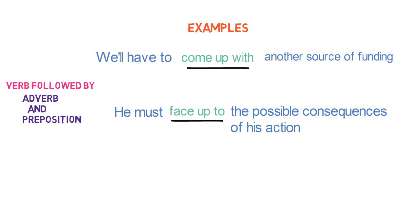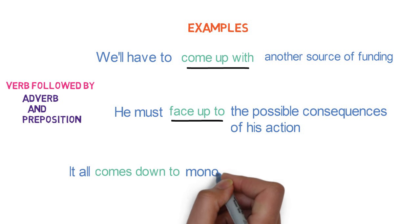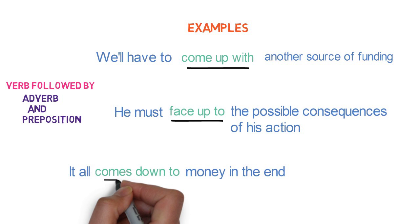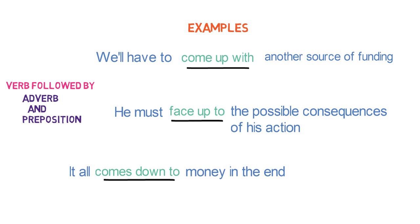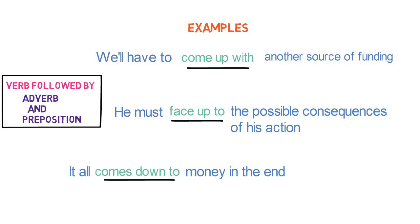Let's look into the last example of phrasal verb containing adverb and preposition. 'It all comes down to money in the end.' Here, 'comes down to' is a phrasal verb having combination of verb, adverb, and preposition. All these are examples of phrasal verb having adverb and preposition.